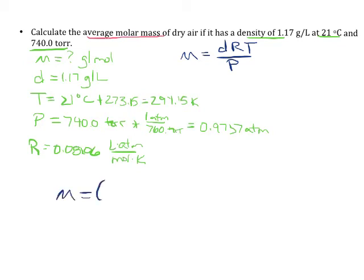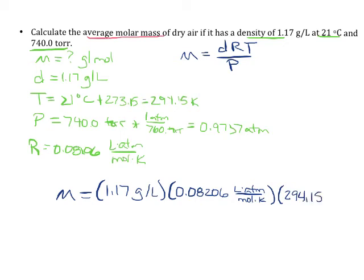Our density, 1.17 grams per liter. Our 0.08206 liter atmosphere per mole Kelvin. Our T, 294.15 Kelvin. Our pressure, 0.9737 atmospheres.